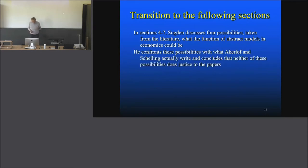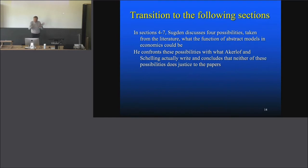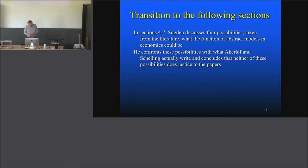He confronts these possibilities with what Akerlof and Schelling actually write. He's looking very carefully — very surprising for an economist — at exactly what they say in their papers, and concludes that neither of these possibilities does justice to the papers.